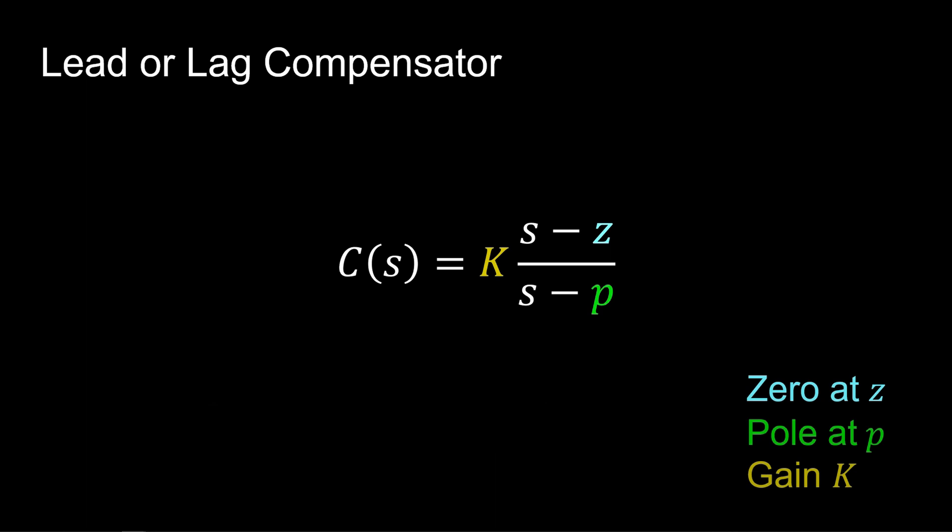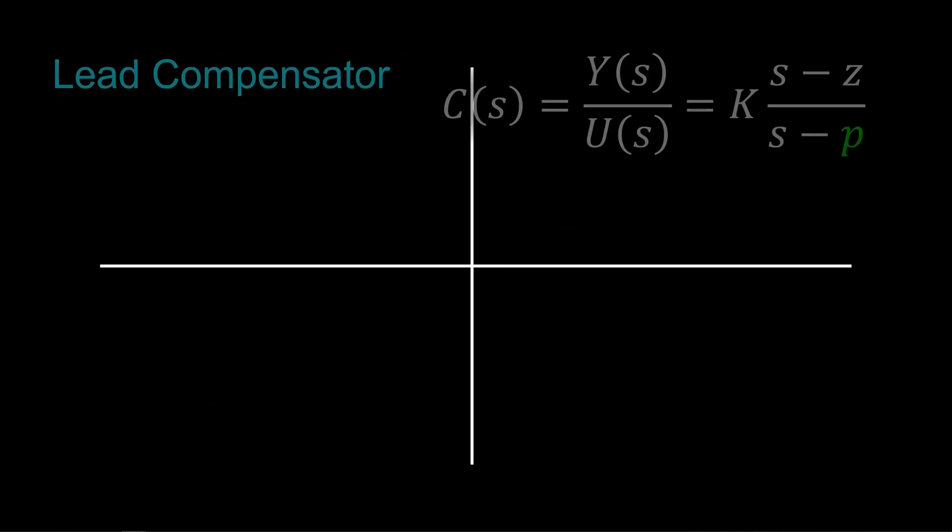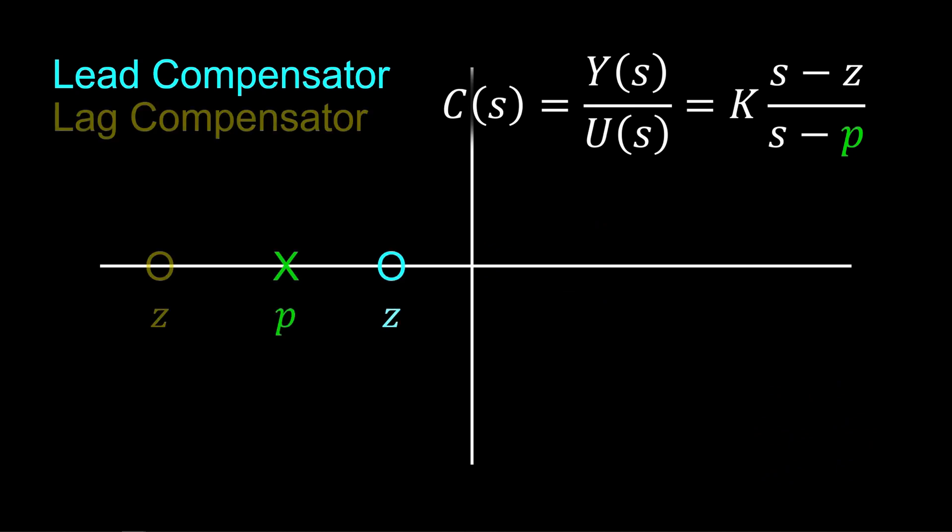It's characterized with a zero at Z, a pole at P, and a gain K. If the zero is right of the pole, then it's a lead compensator. If it's left of the pole, it's a lag compensator. More about compensators will be covered elsewhere.